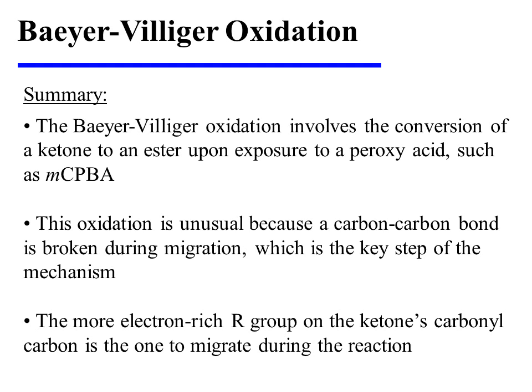In summary, the Baeyer-Villiger oxidation involves the conversion of a ketone to an ester upon exposure to a peroxy acid such as MCPBA. This oxidation is rather unusual because a carbon-carbon bond is broken during the migration, which is the key step of the mechanism. It is the more electron-rich R-group on the ketone's carbonyl carbon that migrates during the reaction.